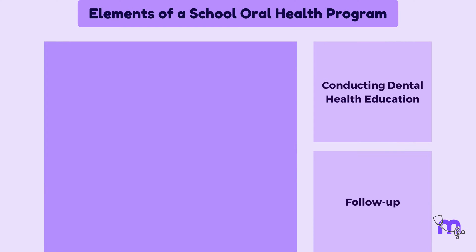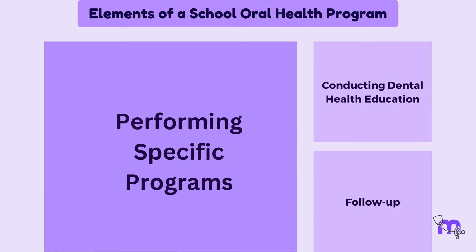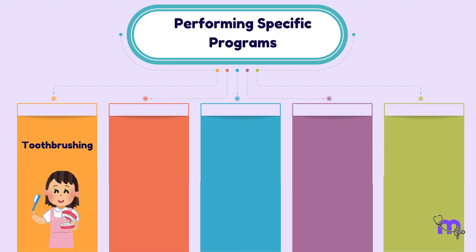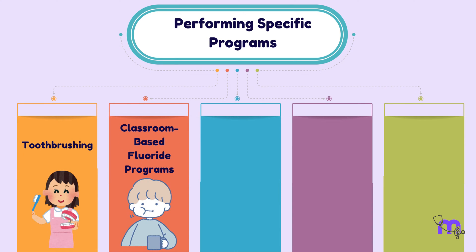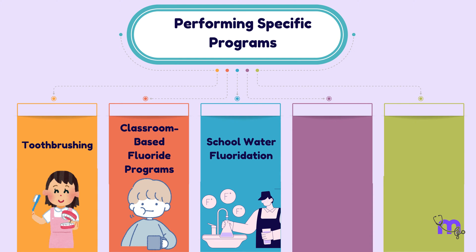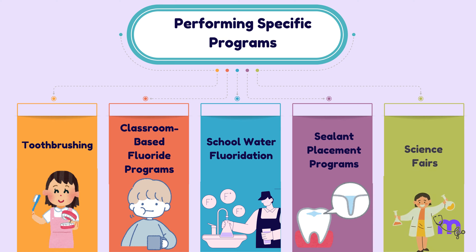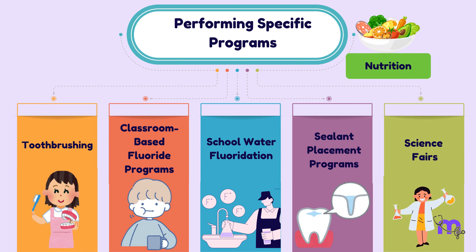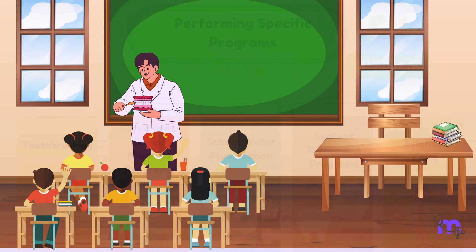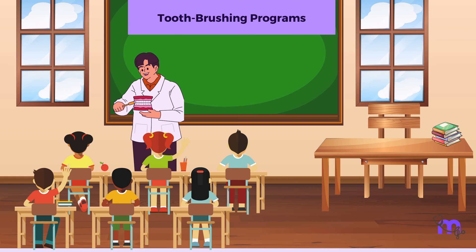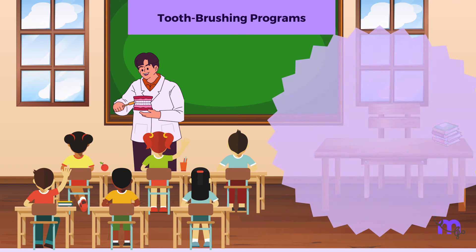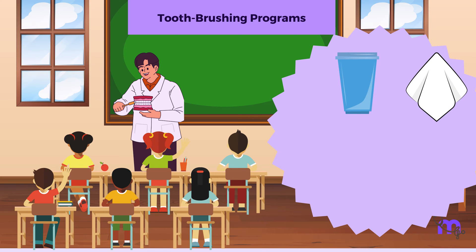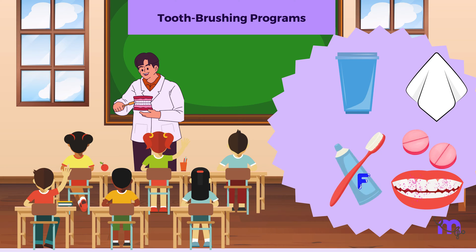The next component of school dental health is performing specific programs. These may include tooth brushing or classroom-based fluoride programs, school water fluoridation and sealant placement programs, as well as science fairs. Nowadays, nutrition as part of school preventive dentistry programs has also been introduced. In the tooth brushing programs, six to eight children are taught in a group at once. They are given a cup, a napkin, along with a kit containing a disclosing tablet to help them understand which areas they need to pay more attention to, a toothbrush, and fluoridated toothpaste.